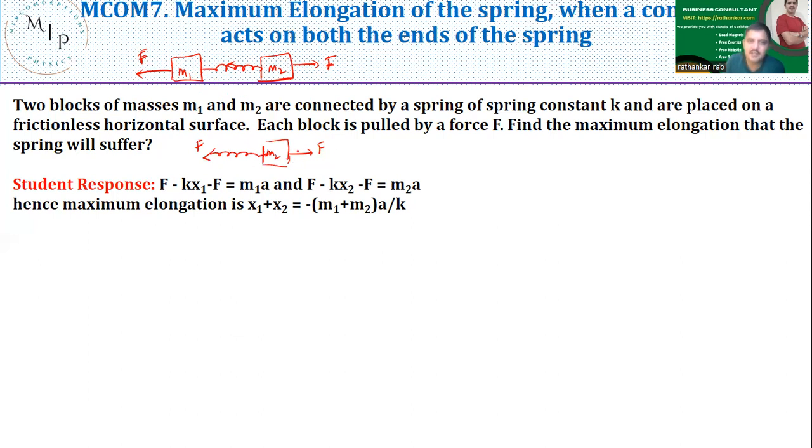And they said that, okay, so when you're pulling it like this, the net force acting on this object is F minus KX1. If suppose because of this application of force, it goes like this, then this is my extension X1 minus F. Net force should now be equal to by Newton's second law. It should be equal to M2 into E. See, F minus KX1 minus F is equal to minus M1A. X1.